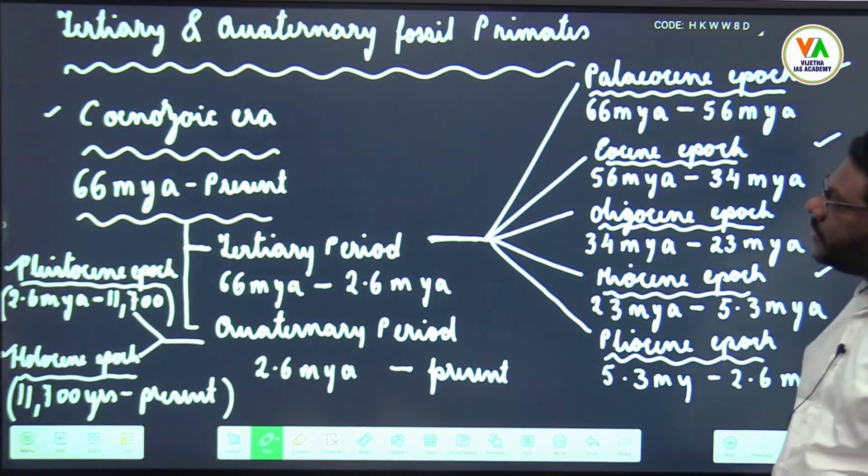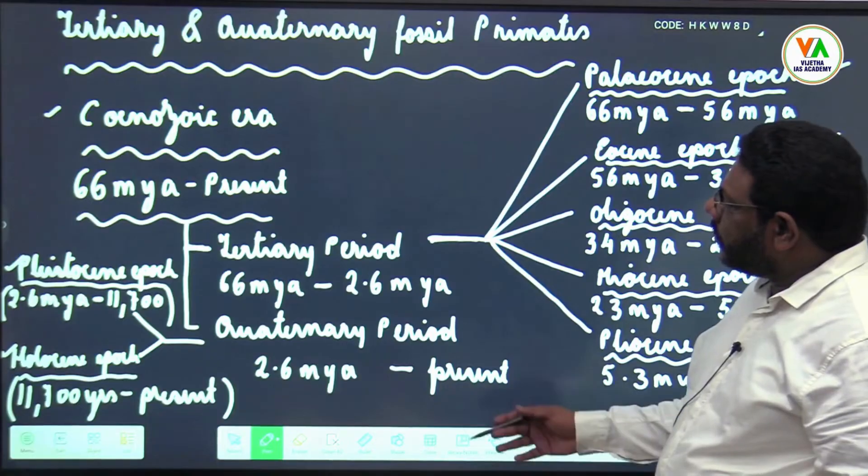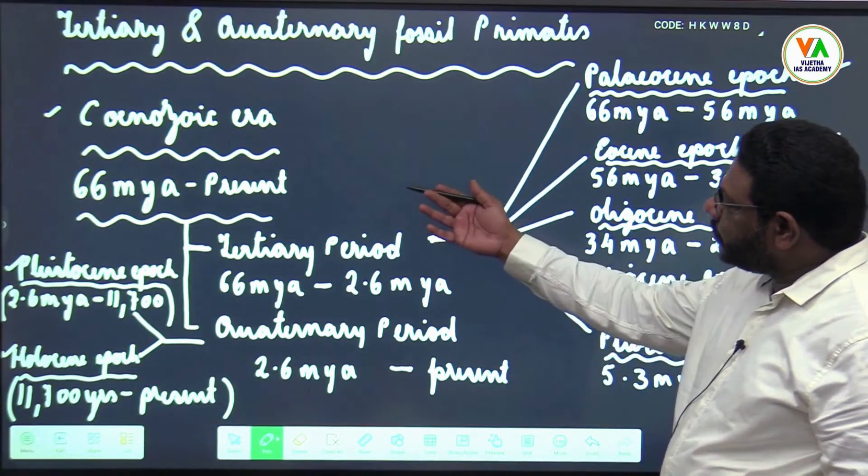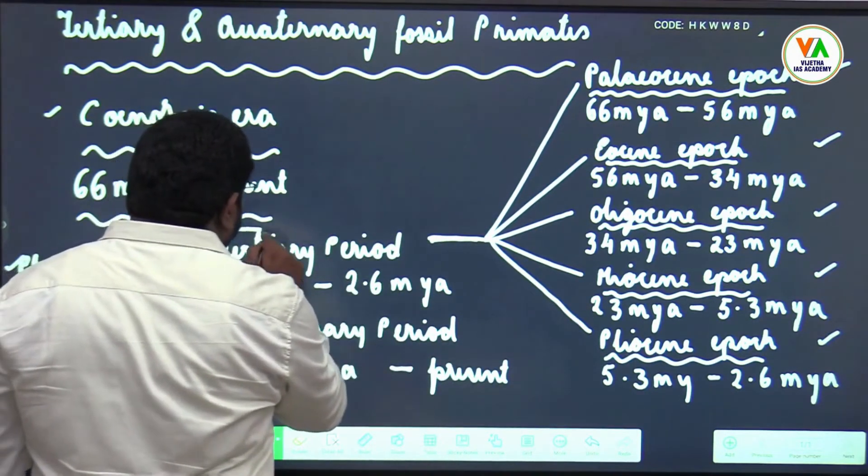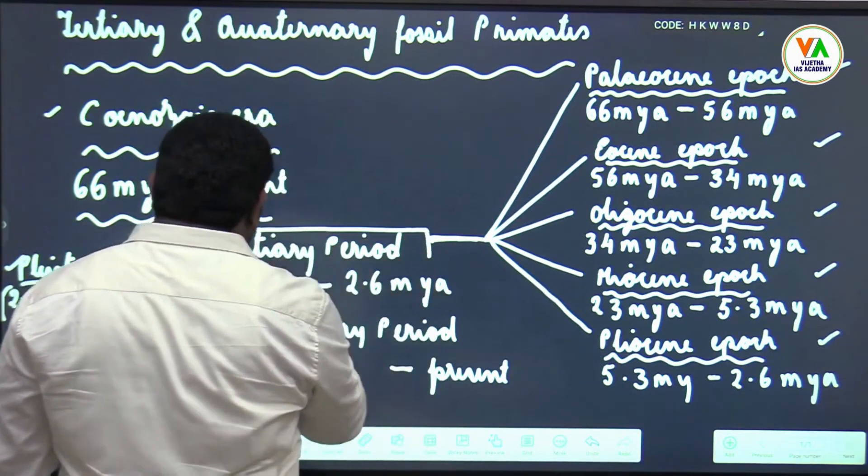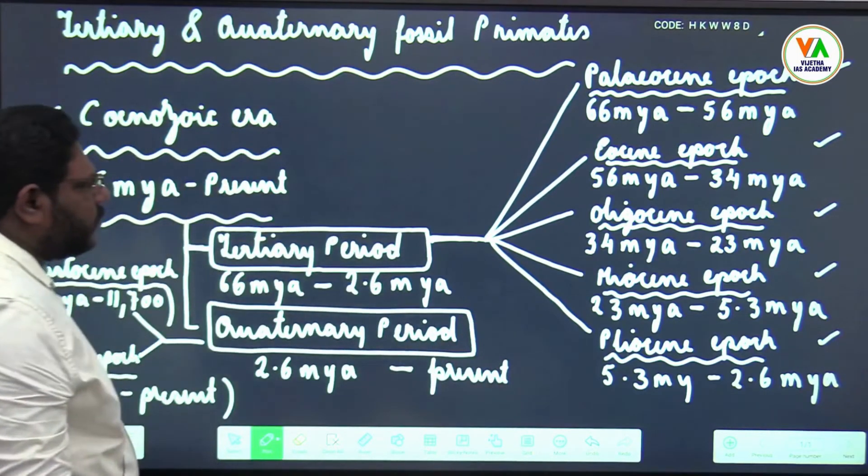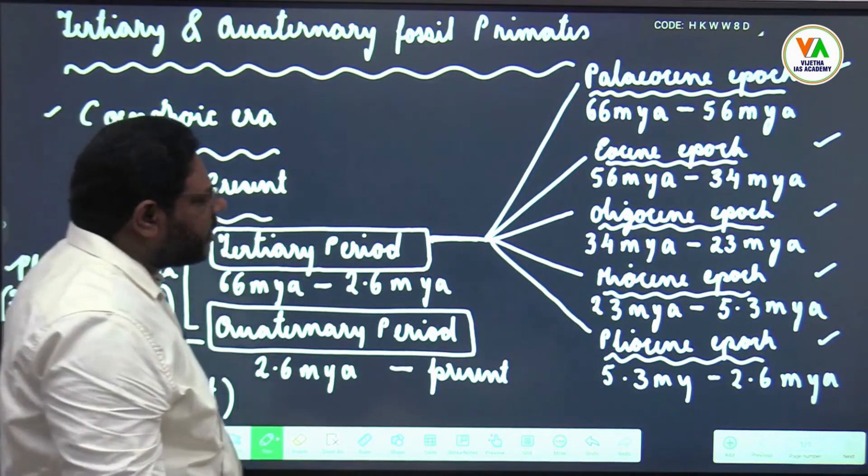We are in Cenozoic era. This Cenozoic era has two periods: Tertiary period and Quaternary period.